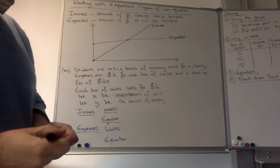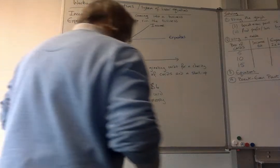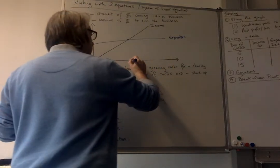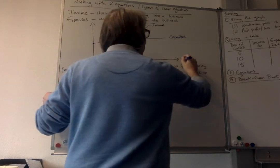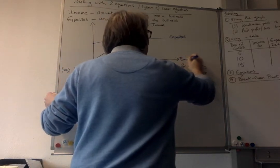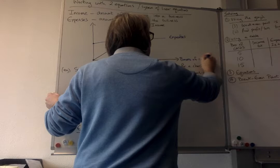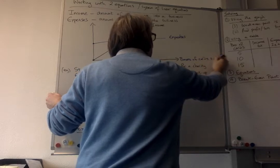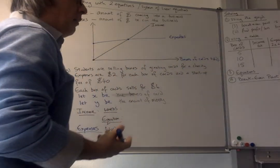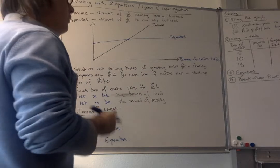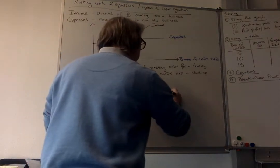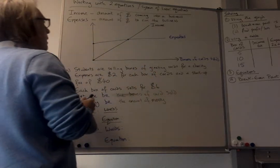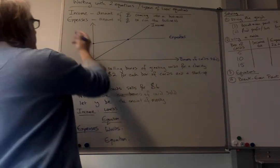So the dependent one is the amount of money. So that means that you can then label your axes. So we can label the axes here, and actually what we're counting is, let's put it here, boxes of cards sold. It doesn't matter if you make them, if you don't sell them, then you're going to get no money. So it's actually the boxes of cards sold. Let's change that there.